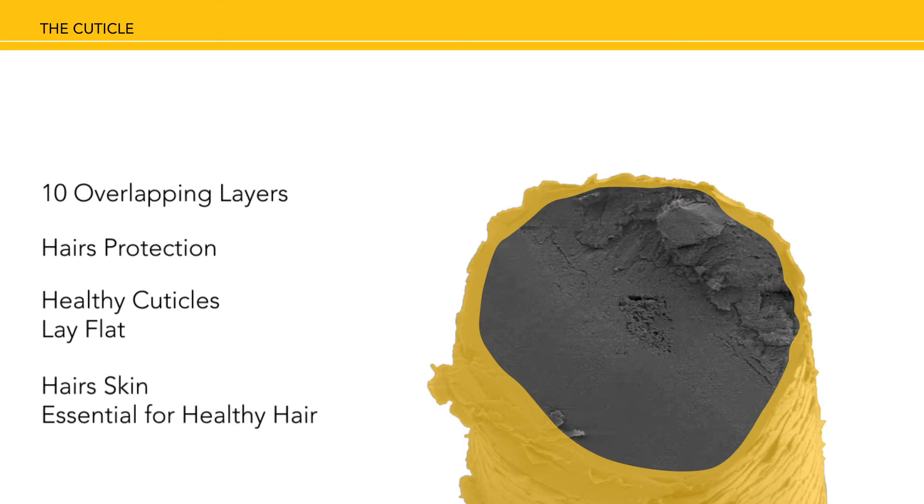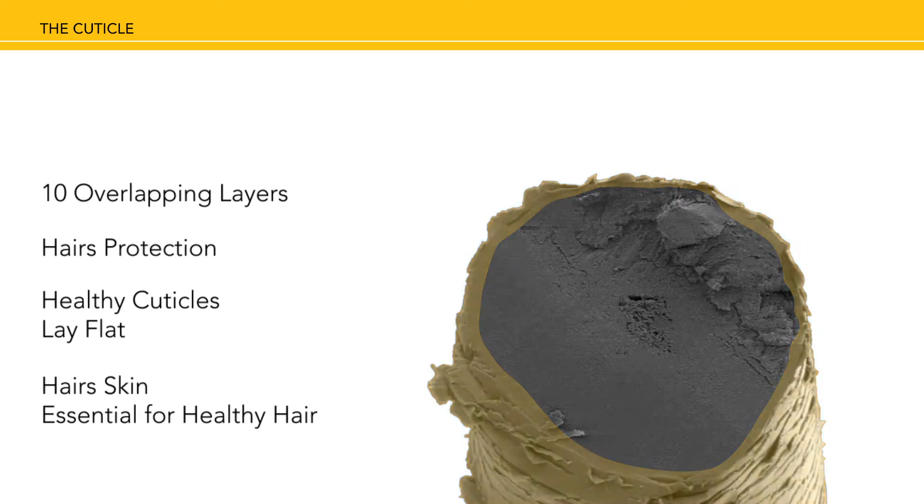The cuticle layer is the hair's first line of defense, the hair's skin, and its structure is essential for healthy hair. Cuticle cells are tough, translucent, and high in sulfur. The cuticle layer accounts for 10-15% of the total hair shaft.